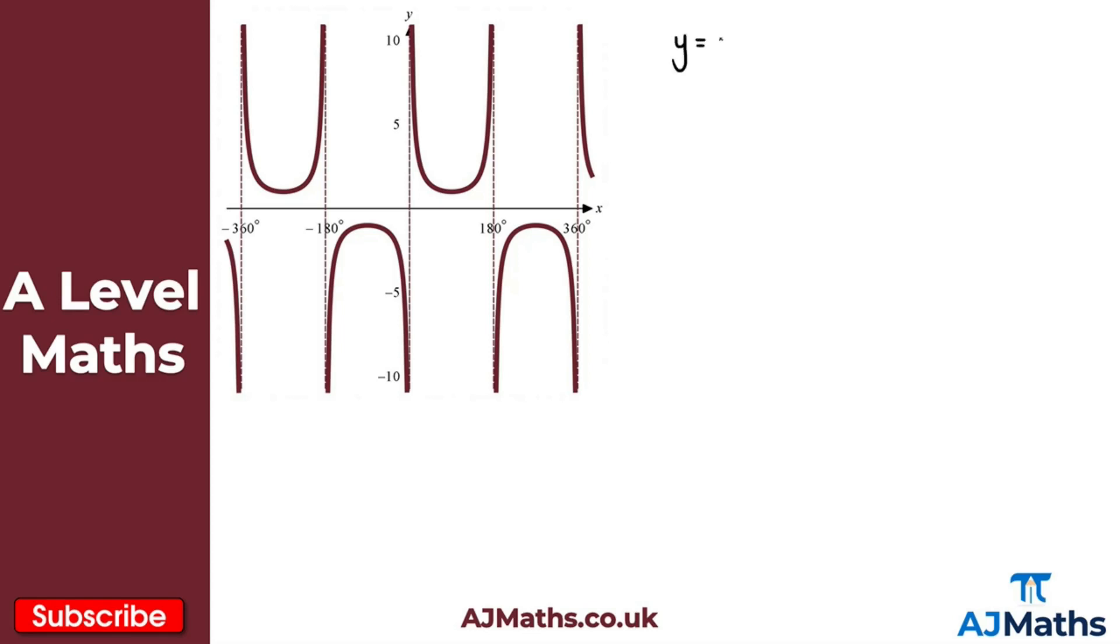So to begin with, what I've got is y equals cosec x. So we have cosec here, and remember cosec is the reciprocal trig function for sine x. This is equal to 1 over sine x.